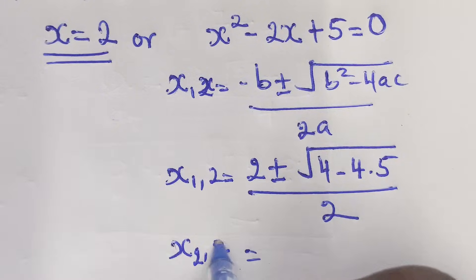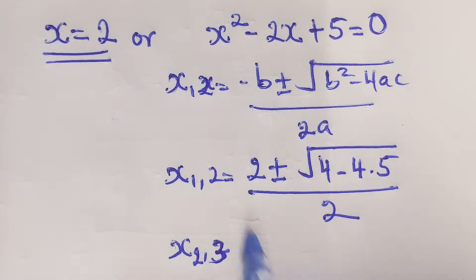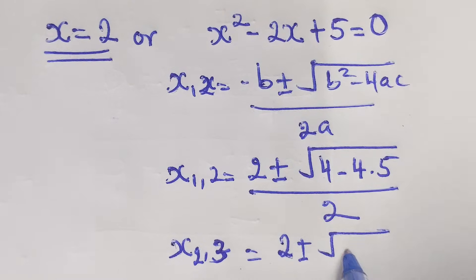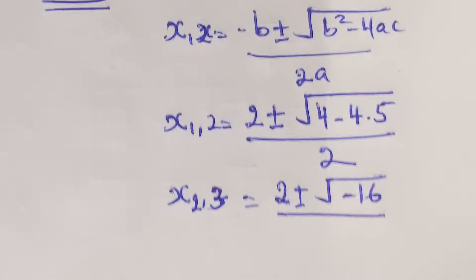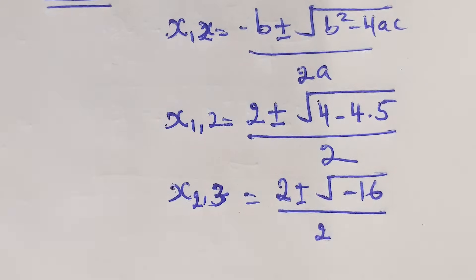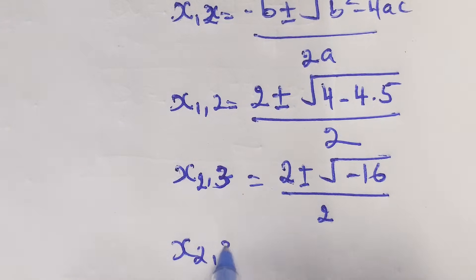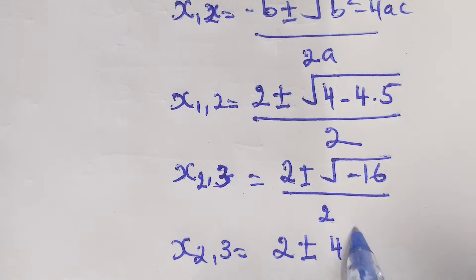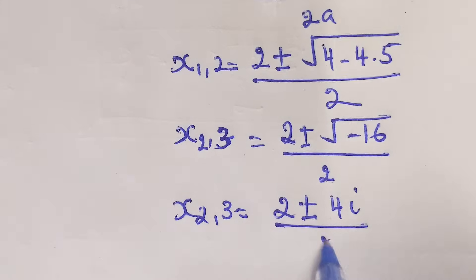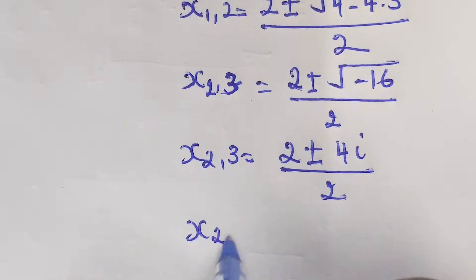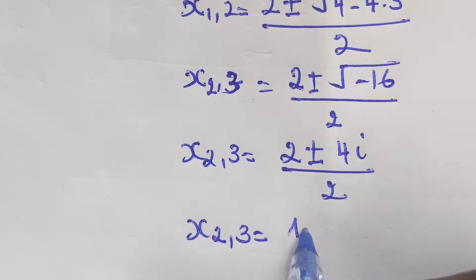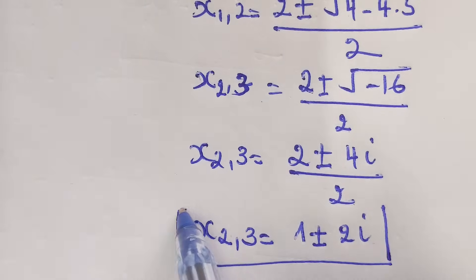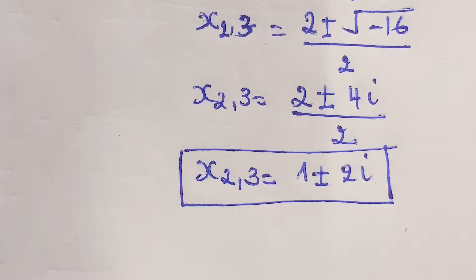x2 and x3 equal negative 2 plus or minus the square root of 4 - 20, which equals negative 16, over 2. This gives 2 plus or minus 4i, which is a complex number. So x2 and x3 equal 1 plus or minus 2i as the final answer.